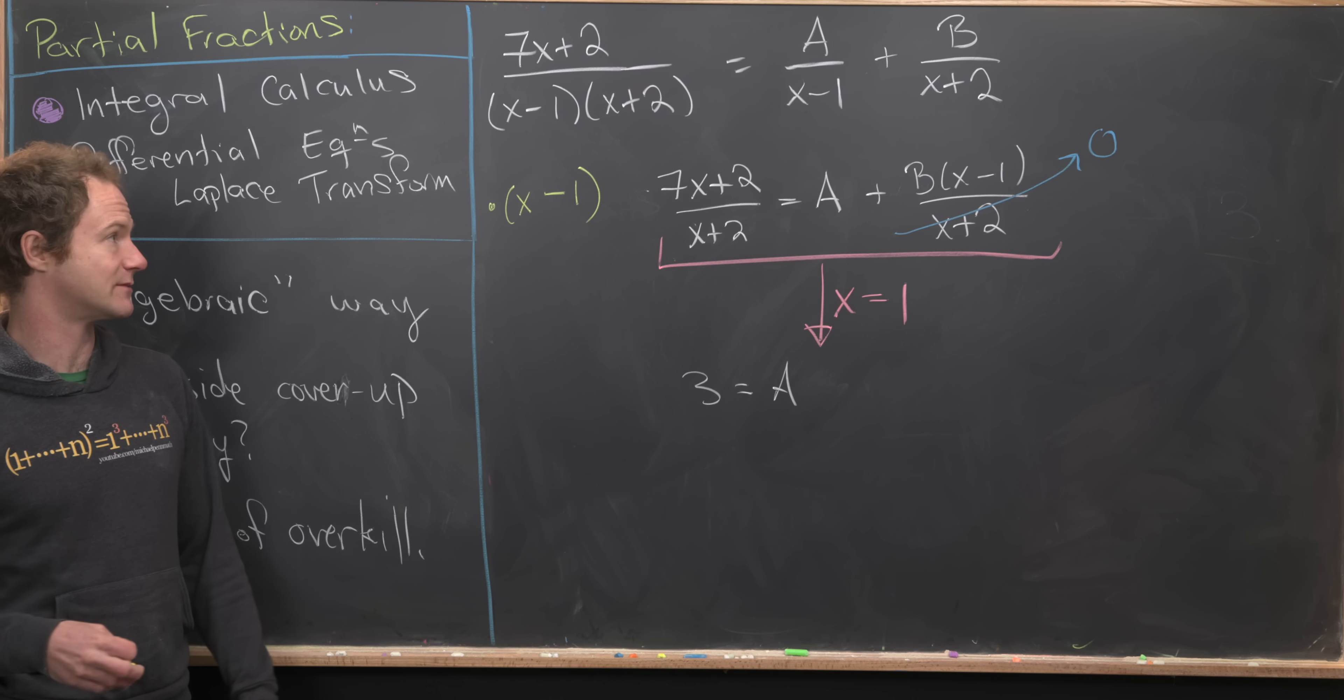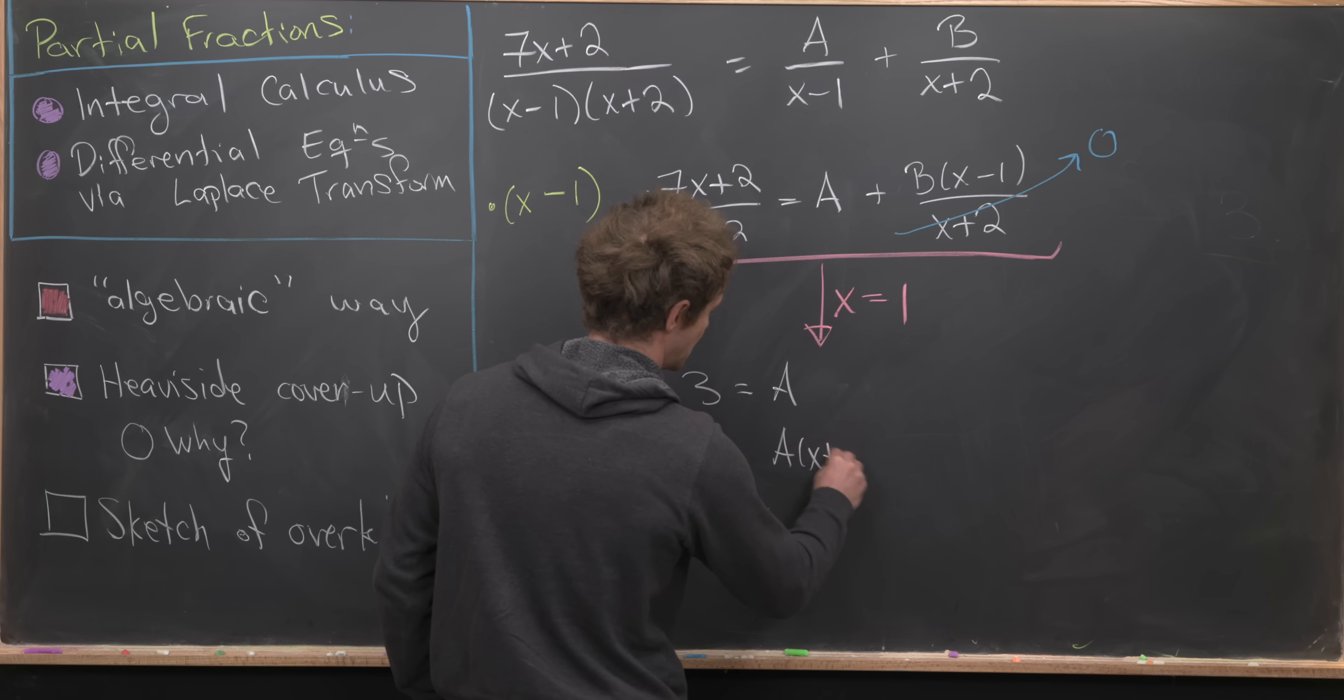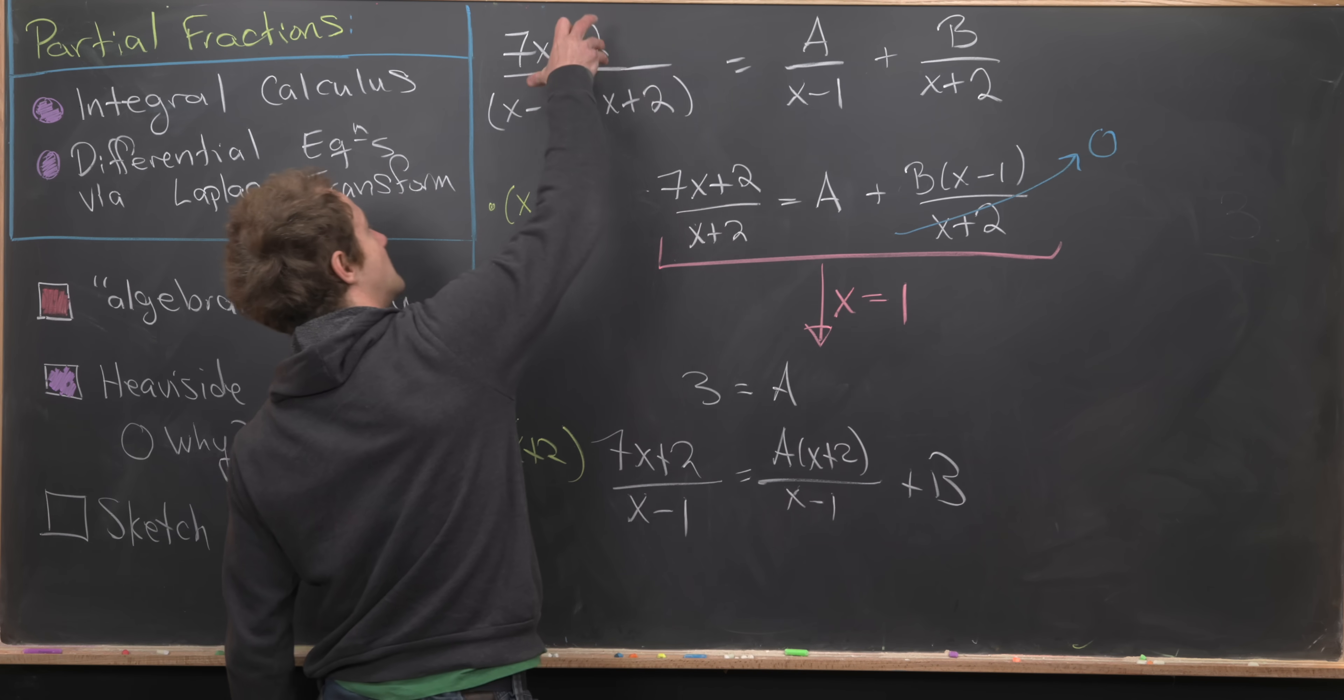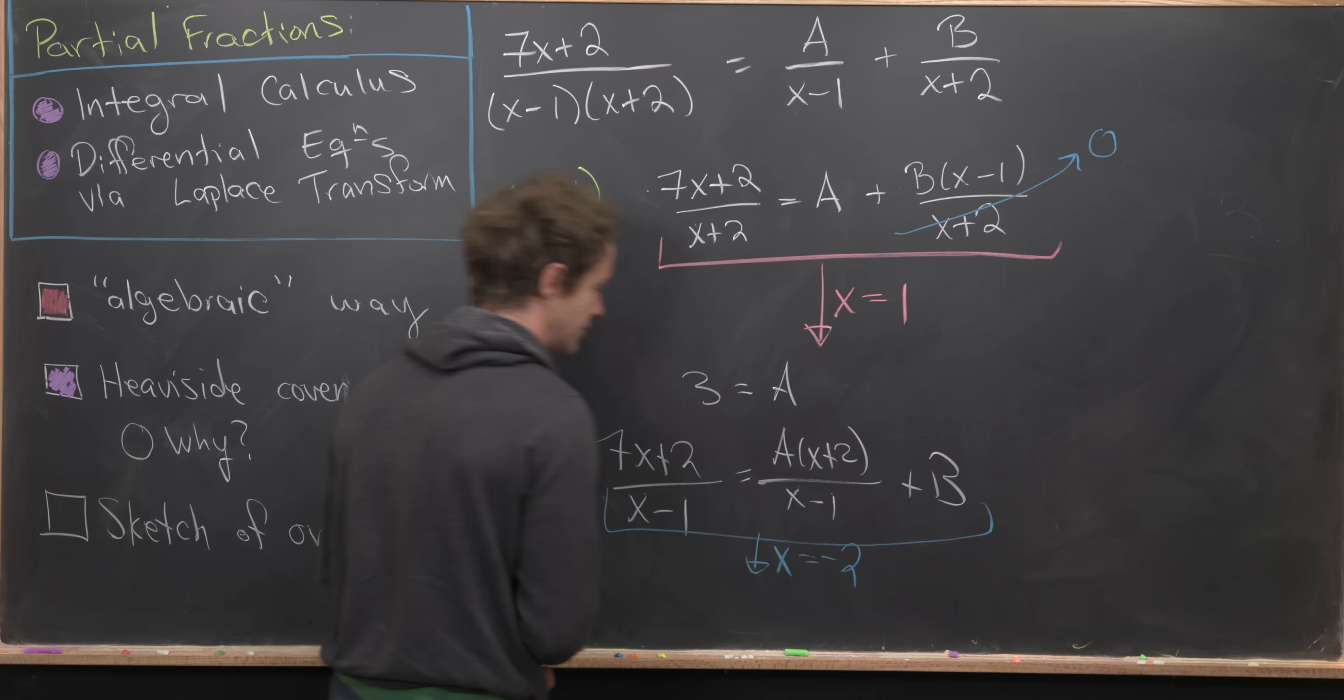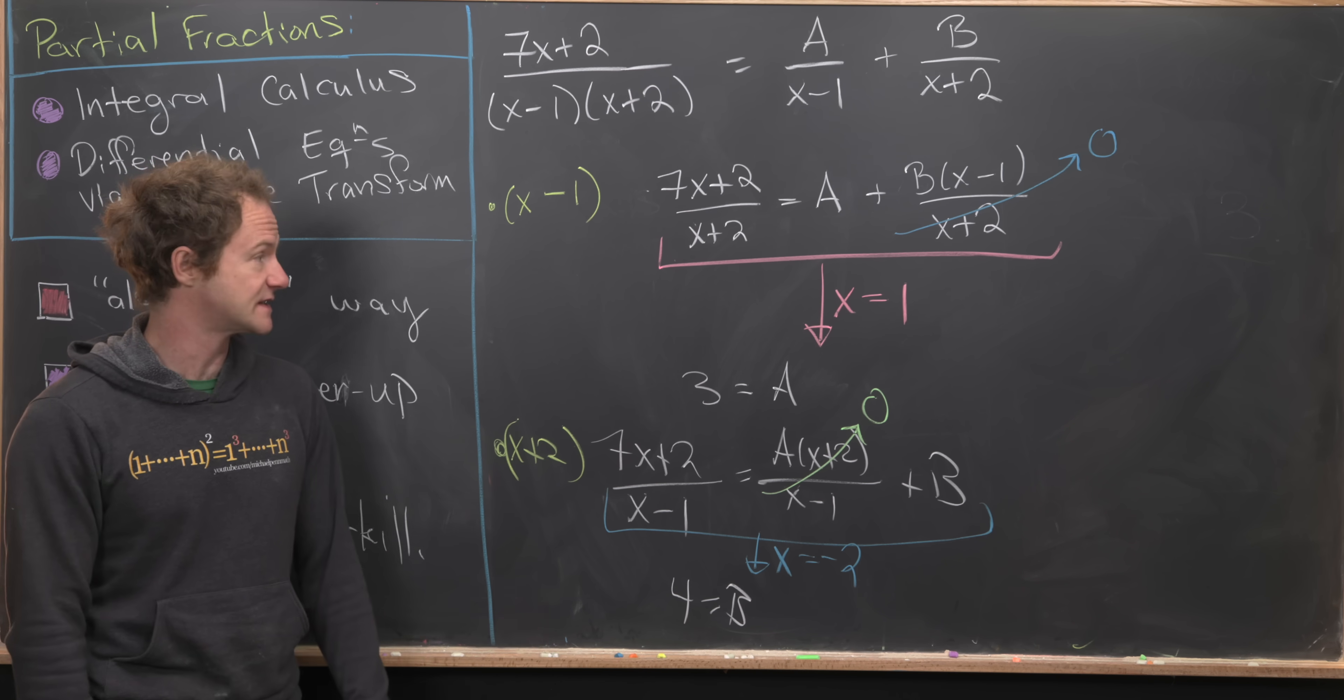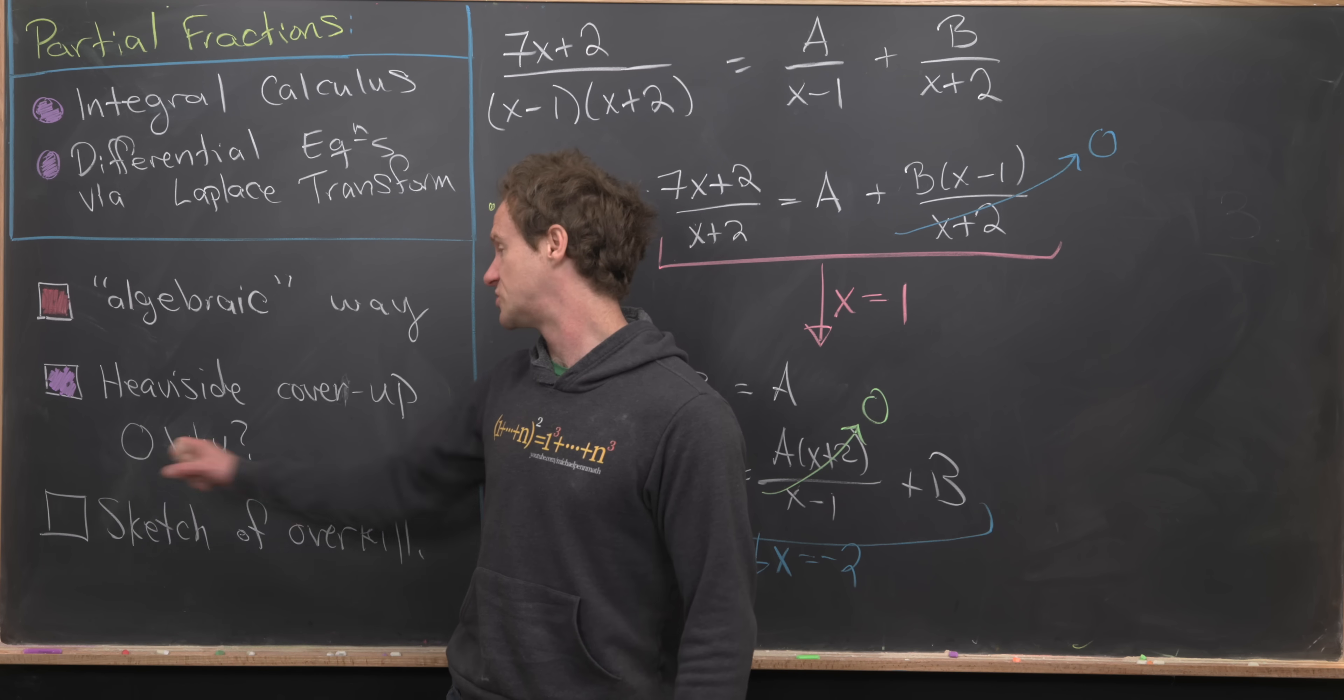Something very similar happens if you multiply both sides of this equation by (x plus 2). We'll be left with (7x plus 2) over (x minus 1) equals A times (x plus 2) over (x minus 1) plus B. We've taken the discontinuity occurring at x equals minus 2 from these two terms and moved it into a zero occurring at that spot for this term. Now we can plug in x equals minus 2, and we'll see that we get B equals 4 because this term trends off towards 0. We've only looked at a special case, but I urge you to look into this more.